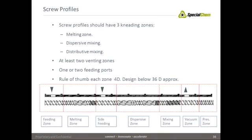In the screw profile we have mixing zones and combating zones. I have divided the screw profile into different zones. Here we have the fitting zone where we are receiving the plastic, most of the time in pellet shape. We have the melting zone. After that we have the side-fitting, the dispersive zone, which in this case is very intensively separated with a lot of length. And after that, the mixing or distributive zone. Then vacuum for venting, and after that pressurizing for pressure buildup when we are extruding the filaments.